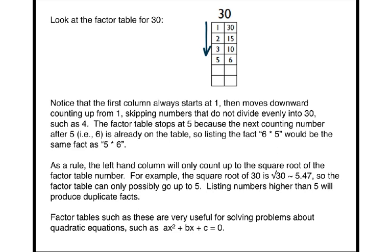The factor table stops at 5 because the next counting number after 5, i.e. 6, is already on the table. So listing the fact 6 times 5 would be the same fact as 5 times 6.